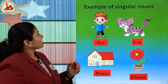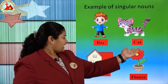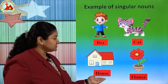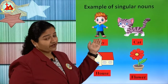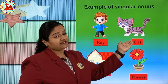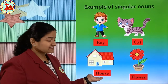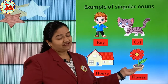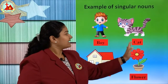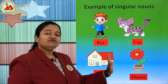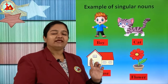Examples of singular noun: boy, cat, house, flower. A person means one boy. Animal or bird means a cat. Next one is a house — place. And a thing — flower. These are all one, so we say boy, cat, house, flower. This is a singular noun. Only one means singular.